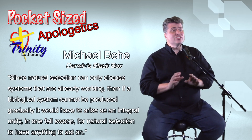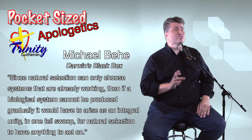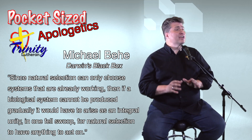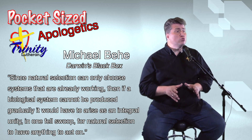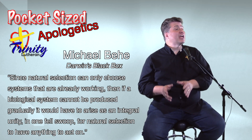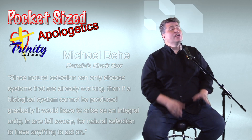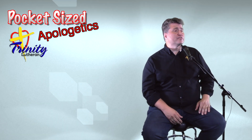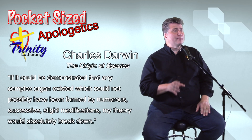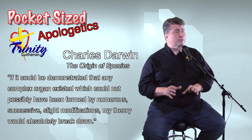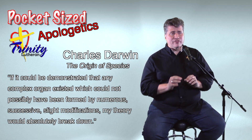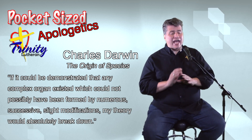But could it offer up an explanation for irreducible complexity? It wouldn't seem so. As Behe notes, since natural selection can only choose systems that are already working, then if a biological system cannot be produced gradually, it would have to arise as an integral unity in one fell swoop for natural selection to have anything to act on. In fact, Charles Darwin admitted as much in The Origin of Species. He said, "If it could be demonstrated that any complex organ existed which could not possibly have been formed by numerous, successive, slight modifications, my theory would absolutely break down."